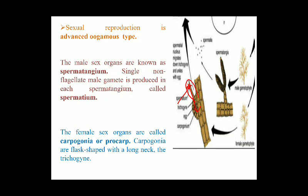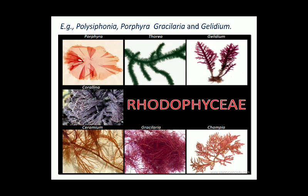Examples of algae belonging to Rhodophyceae include Polysiphonia, Porphyra, Gracilaria, and Gelidium. With this we have completed the classification of algae. In the next part, we will deal with the economic importance of algae. Till then, take care of yourself.